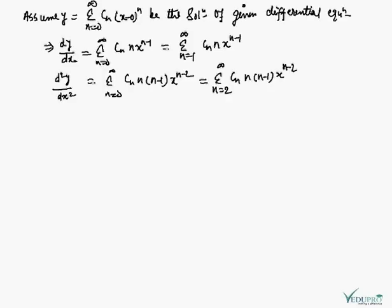Since x = 0 is an ordinary point of the given differential equation, we assume that y = Σ(n=0 to ∞) cₙ(x - 0)ⁿ is the solution of the given differential equation. Differentiating with respect to x, dy/dx = Σ(n=0 to ∞) cₙ · n · x^(n-1). Again differentiating, d²y/dx² = Σ(n=0 to ∞) cₙ · n(n-1) · x^(n-2).